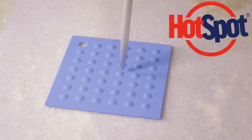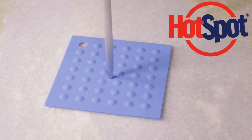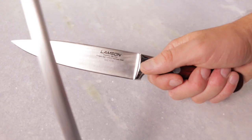Hold your steel vertically against a non-slip surface as demonstrated here with Lamson's Hotspot Trivet. Place your thumb on the top of the handle.